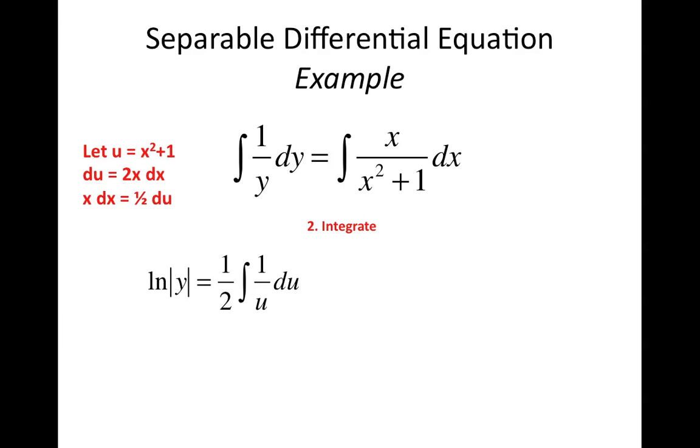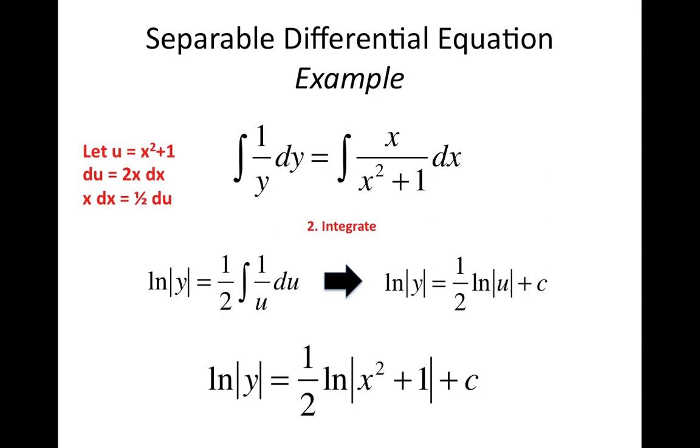That 1 half, since it's just a number, can come right outside the integral. Then you have the integral of 1 over u du, which is a lot simpler. That simply goes to 1 half ln u plus c. That constant there is actually from both sides of the equation, but since it's just a constant, we simply put them together as one constant on the right hand side. What you want to do next is sub u back in, which is rather simple since u equals x squared plus 1. You finally have, after your integrate step, ln y equals 1 half ln x squared plus 1 plus some constant little c.